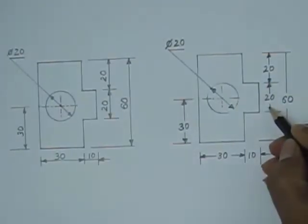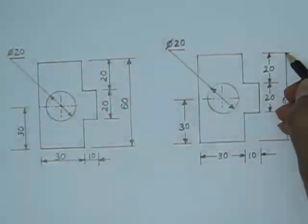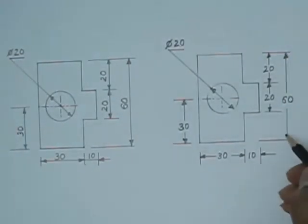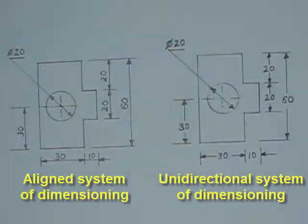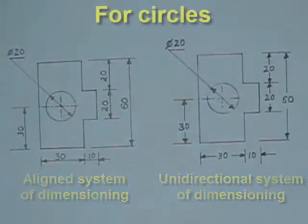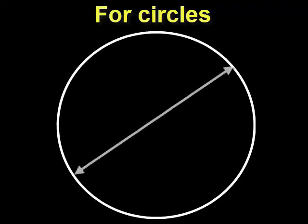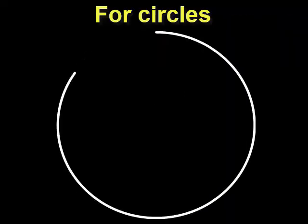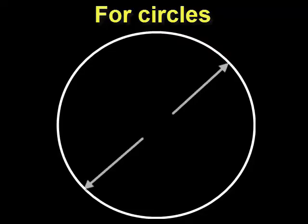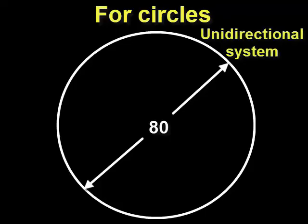In the aligned system, the dimension numbers are aligned along the dimension line. But in the unidirectional system, the numbers are always such that they can be read from the bottom of the drawing sheet. In some cases, we can dimension a circle without using the leader line — in the aligned system we write the dimension number along the dimension line, and in the unidirectional system we write it so the number can be read from the bottom.